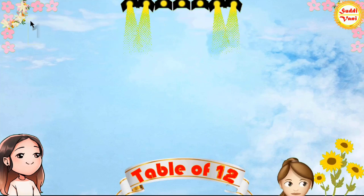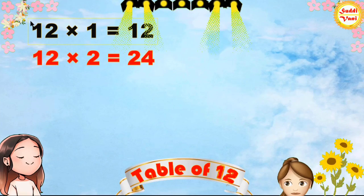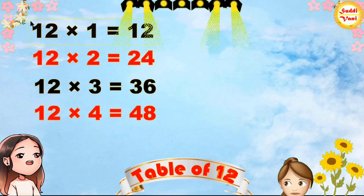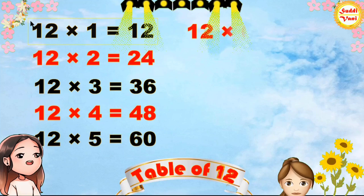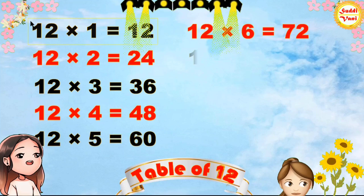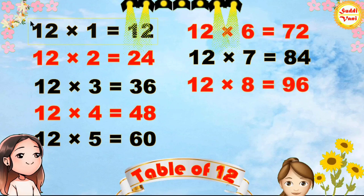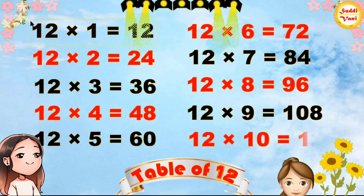Once again: 12×1=12, 12×2=24, 12×3=36, 12×4=48, 12×5=60, 12×6=72, 12×7=84, 12×8=96, 12×9=108, 12×10=120.